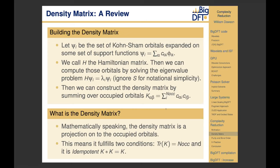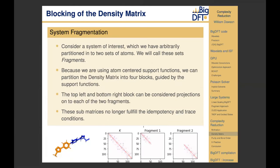Because of this projection property, the density matrix fulfills two conditions: first, the trace of the density matrix should equal the number of electrons; second, it should be idempotent — meaning if you take the density matrix and multiply it by itself, it should stay the same. With this in mind, let's consider a system divided into two sets of atoms — an orange set and a blue set — which we call Fragment 1 and Fragment 2.